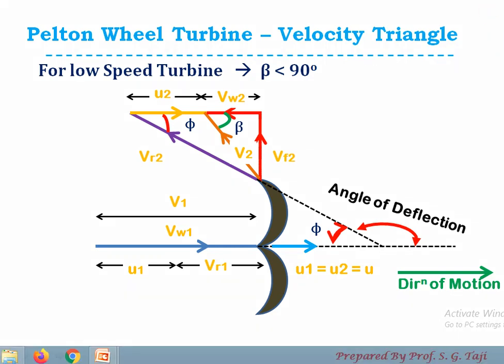At the inlet, the jet of water comes in the form of a straight horizontal line and strikes at the splitter. Because the jet comes straight horizontally, alpha and theta both reduce to zero. Since V1 is not making any angle with respect to the direction of motion, Vf1 also becomes zero, and there is only a horizontal component of velocity V1, which is Vw1. U1 and U2 are at the same radial distance from the center so U1 equals U2, equal to U — the peripheral velocity of the vane.